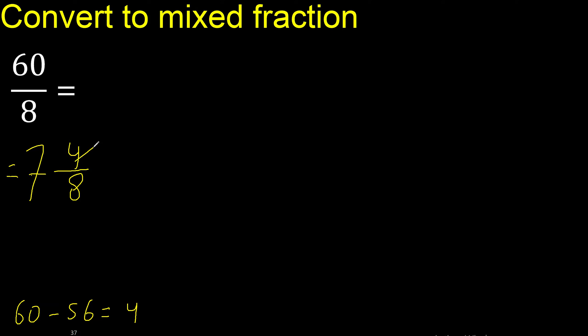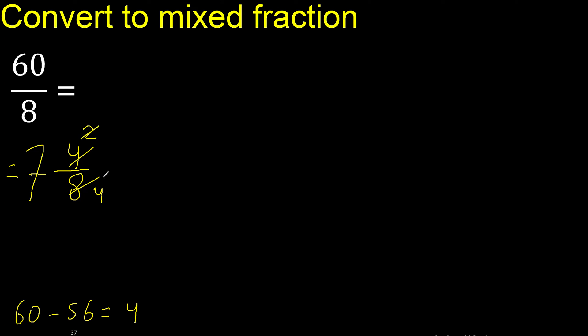This can be simplified because it can be divided by the same number. Divided by 2: 4 divided by 2 is 2, 8 divided by 2 is 4. Can be divided by 2 again: 1, 2. Ok.